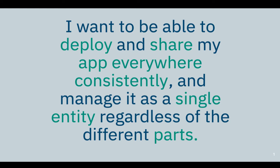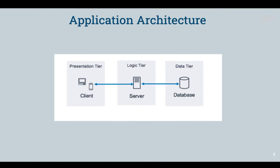We're going to understand what the actual problems are with Kubernetes deployment. Let's take a look at a conventional application architecture — an e-commerce application with a presentation tier where user requests come in, attached to a logical tier where the business engine is, which could be an API deployed as a deployment or service, and a database layer — Elasticsearch, SQL, Postgres, Cassandra, or any NoSQL.